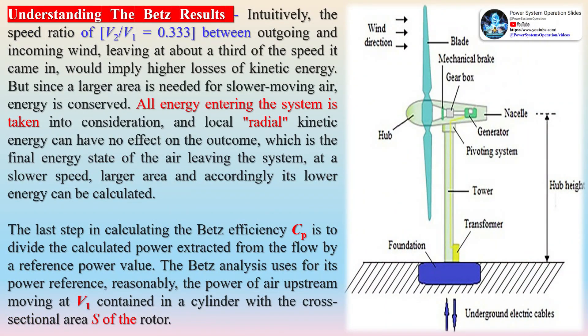The flow into and out of the rotor is axial. This is a control volume analysis, and the control volume must contain all flow going in and out — failure to account for that flow would violate the conservation equations. The flow is non-compressible; density remains constant and there is no heat transfer. Uniform thrust is exerted on the disk or rotor.